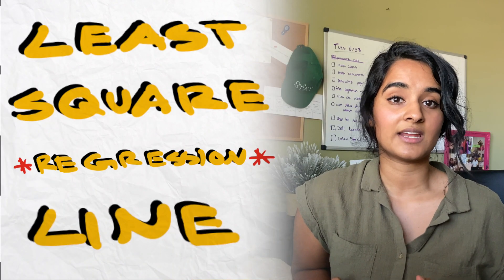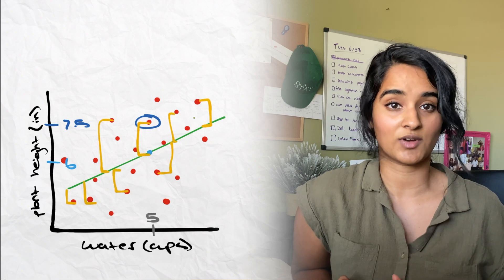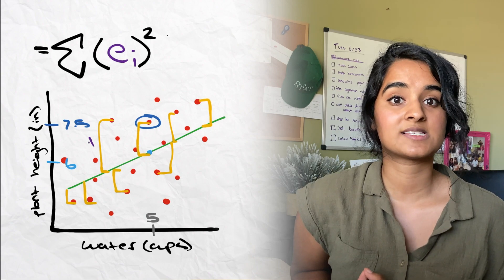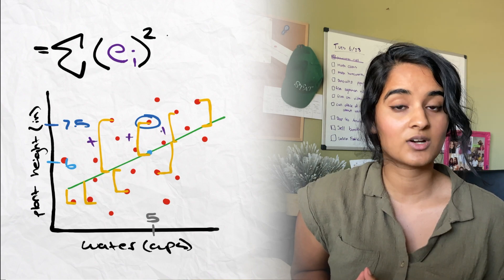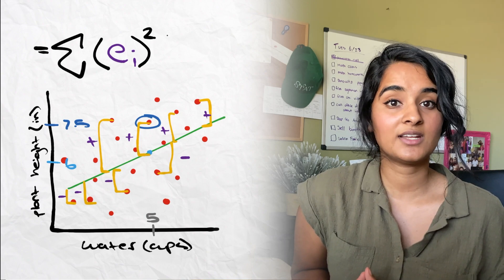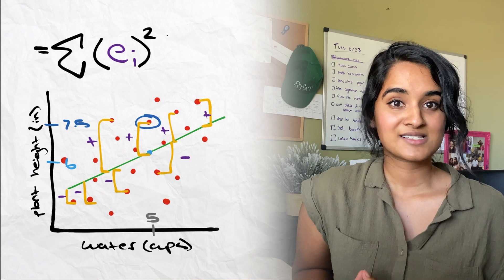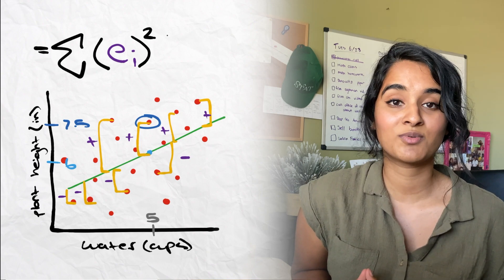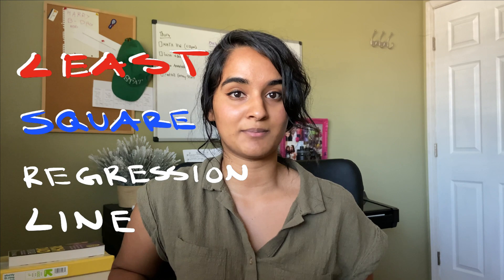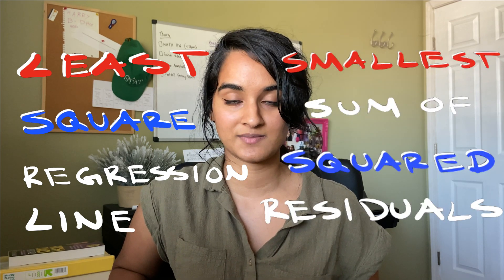The least squares residual line calculates the residual for every single data point to the regression line, squares the residuals, and then sums them up. We square the residuals because data points above the regression line have a positive residual and data points below have a negative residual — so by squaring, we get rid of the negative sign. Then we sum up all the squared residuals, and your computer program finds the regression line with the smallest sum of squared residuals. That's why it's called the least squares regression line. This line can be known as y-hat, line of best fit, the least squares regression line, or regression line.